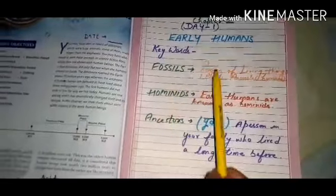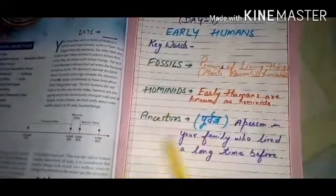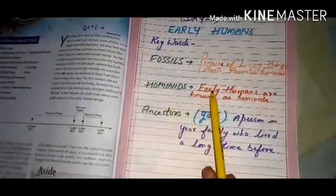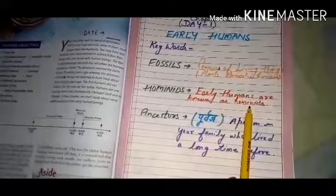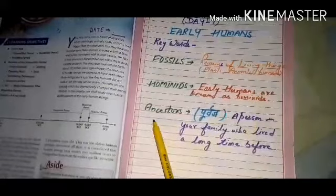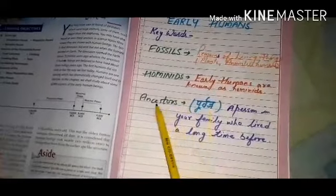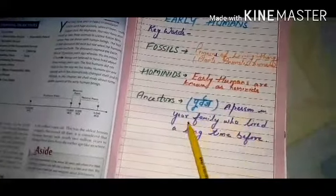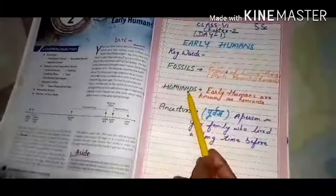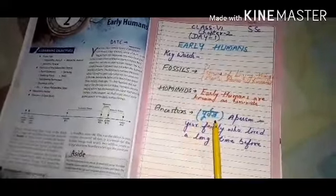First key word is fossils. Fossils are the remains of living things such as plants, animals, and humans. Next is hominids — early humans are known as hominids. Next is ancestors. An ancestor means a person in your family who lived a long time before you. Hominids are considered as the ancestors of humans.